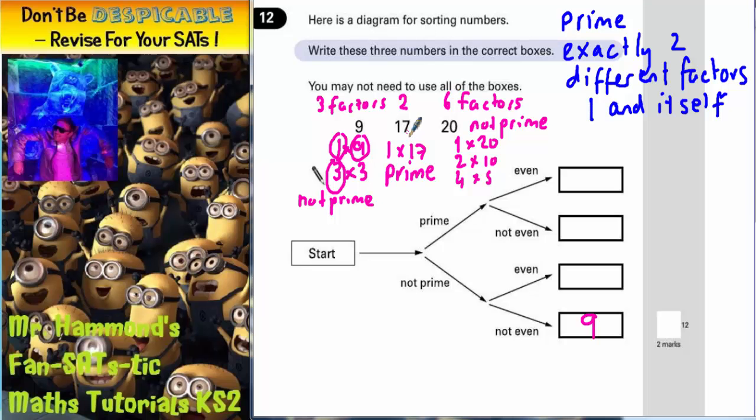The number 17 is prime. So if we start at the beginning there, we've got to go up the prime arrow because it is prime. But it is odd, which means it's not even, which means we go down this arrow. So 17 needs to go in there. So again, 17 is prime, but it is not even. So it goes in that box.